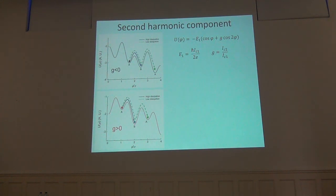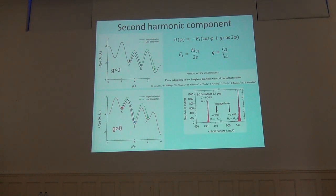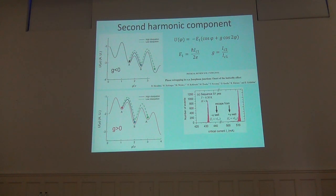Since a second harmonic component is expected in the current-phase relation, the washboard potential becomes a double-well potential. Depending on the junction parameters, two critical currents could be observed for a double-well potential, meaning that when measuring the switching histograms we may observe single-mode or bimodal switching current distributions. We are therefore performing numerical simulations of the phase dynamics as a function of temperature, the quality factor, and the g-factor — given by the ratio between IC2 and IC1 in the current-phase relation. The retrapping process is crucial in order to distinguish for which junction parameters two critical currents are observed and for which a single-mode or bimodal switching current distribution is expected.